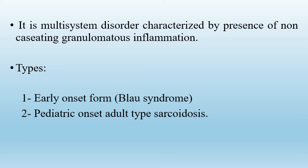There are two types of pediatric sarcoidosis: the early onset form or Blau syndrome, which presents before the age of five years old, and the pediatric onset adult type sarcoidosis, which presents at a later age with clinical manifestations similar to adult type sarcoidosis.